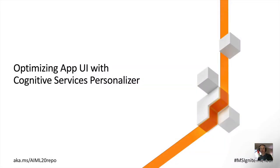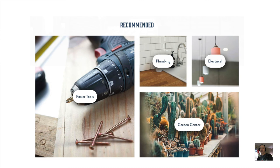We've got time for one more quick example of a pre-built AI — this time from the decision category of cognitive services. It's called the Personalizer. The Personalizer service allows us to customize the interface of apps in real time, balancing what the user is most likely to want to see with what we'd like them to be doing. We can see how this works with the recommended section of Tailwind Traders, which shows a selection of departments — one large hero image on the left and a few smaller images on the right.